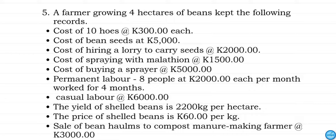The question reads: a farmer growing four hectares of beans kept the following records. The cost of 10 holes is 3,000 kwacha each. The cost of bean seeds is 5,000 kwacha. The cost of hiring a lorry to carry seeds is 2,000 kwacha. The cost of spraying with marathon is 1,500 kwacha. The cost of buying a sprayer is 5,000 kwacha. Permanent labor: 80 people at 2,000 kwacha each per month, worked for four months. The cost of casual labor is 6,000 kwacha. The yield of shelled beans is 2,200 kg per hectare, and the price of shelled beans is 6 kwacha per kg. Sales of bean husks to a compost-making farmer at 3,000 kwacha.